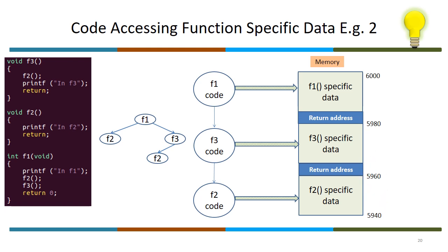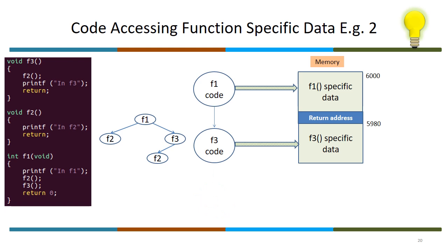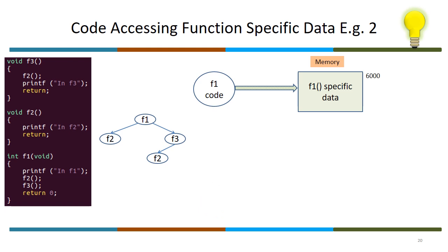F2 unwinds. F1 again invokes F3, and F3-specific data is allocated — the address of F3-specific data is also 5980. F3 now invokes F2, and F2-specific data starts at 5960. When we say absolute addressing, the address cannot change throughout the program. But here we see the address of F2-specific data changes — first 5980, then 5960. This violates the absolute addressing mechanism, so the compiler cannot use direct addressing here.